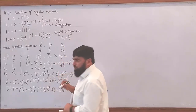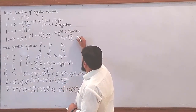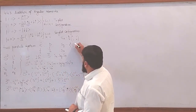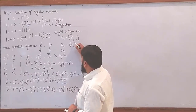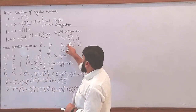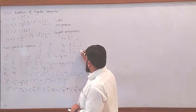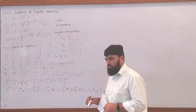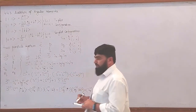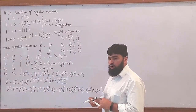What was Sx? It was (ℏ/2) times the matrix [0,1; 1,0]. What was Sy? It was (ℏ/2) times [0,-i; i,0] — keeping i factored out it becomes [0,-i; i,0]. And Sz was (ℏ/2) times [1,0; 0,-1]. Note that Sz has the minus sign on the lower diagonal, while Sx does not have any minus sign.